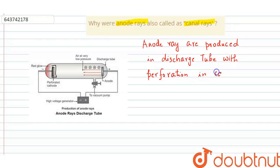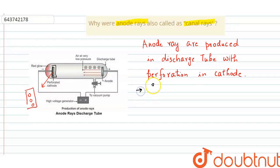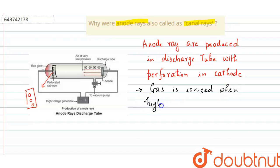That means the cathode is made with some holes in it. In the discharge tube, a gas is filled. This gas is ionized when high voltage is applied across the electrodes.